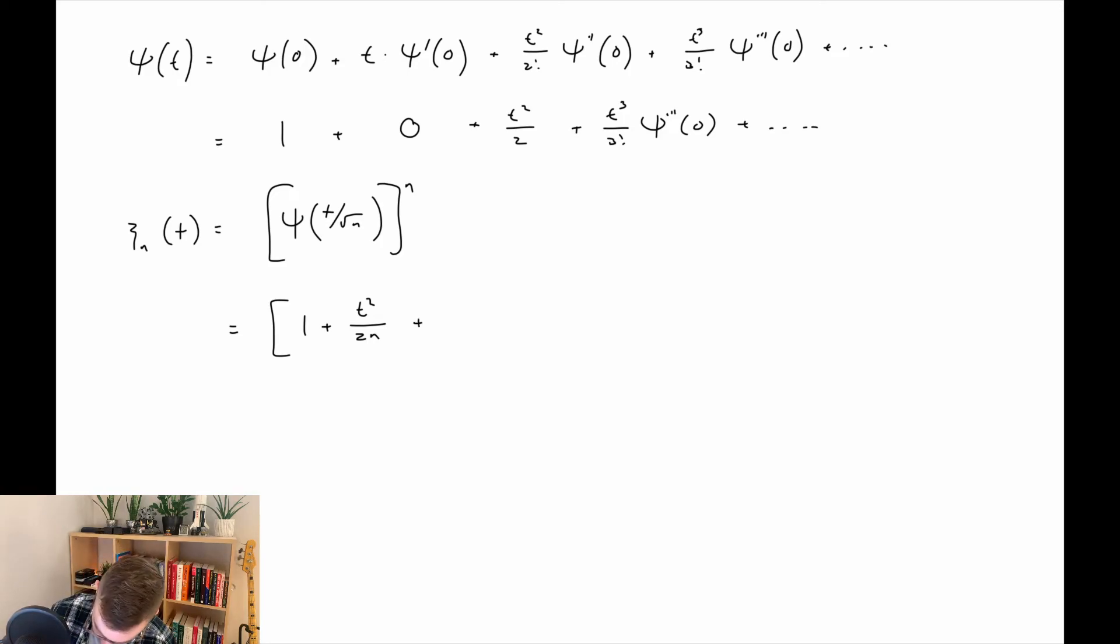Because we're plugging t over square root of n into t squared. So this is then plus t cubed over three factorial times n to the three halves, something like this, and then plus a bunch of other terms all to the nth power. Making progress.